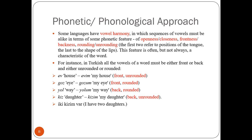Likewise, 'göz' — written with an umlaut in Turkish — has both vowels front and rounded. 'Yol' means 'way,' 'path,' or 'road' — in 'yol' both vowel sounds are harmonious in terms of part of the tongue, being back and rounded. 'Kaz' has both vowels back and unrounded.